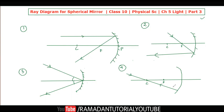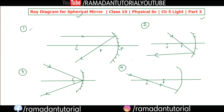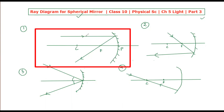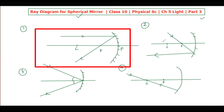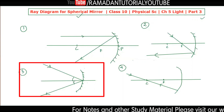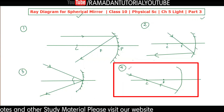So, to summarize the four rays of light for the spherical mirror: First, a ray parallel to the principal axis is reflected through the focus. Second, a ray passing through the focus is reflected parallel to the principal axis. Third, a ray that hits the pole reflects at equal angles to the principal axis. Fourth and last, a ray passing through the center of curvature goes back along the same path.